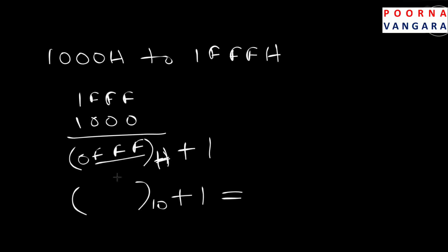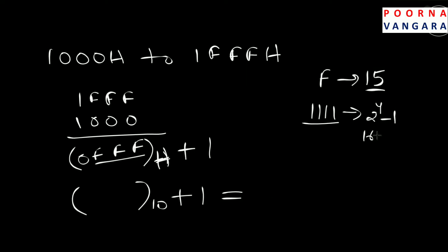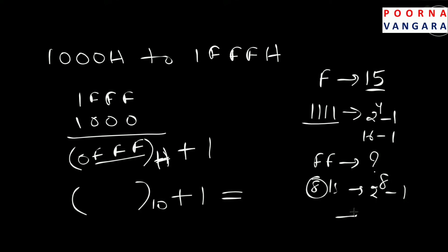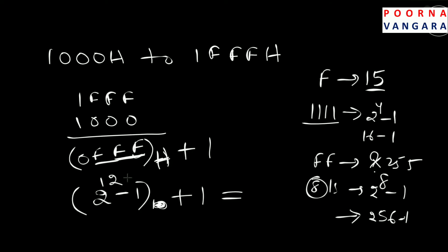Whenever you have all F's, the conversion is straightforward. For example: F = 15, because F is four 1-bits, so 2^4 − 1 = 15. If you have FF (two F's), that is eight 1-bits: 2^8 − 1 = 256 − 1 = 255. For FFF (three F's): 1F is four bits, plus FF is eight bits, plus one more F is four bits — total 12 ones — so 2^12 − 1.